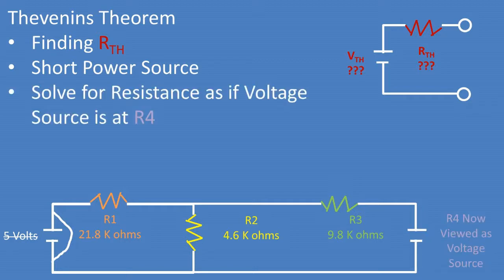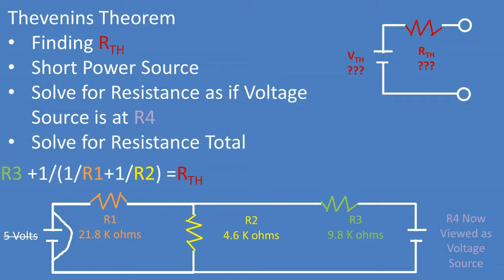Now we solve for resistance total as if there is a voltage source where resistor 4 was. I will assume that you know the basics of parallel series circuits. If you don't, you can review some other videos on this channel.